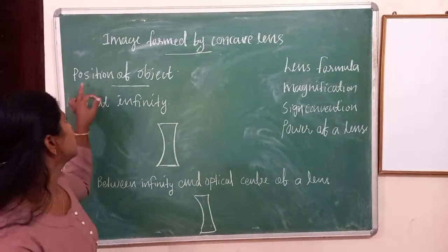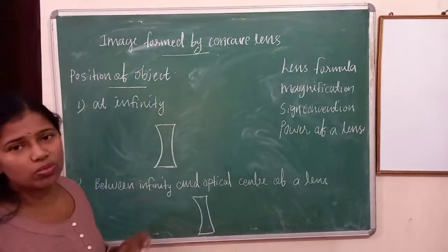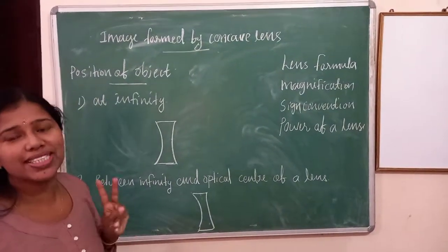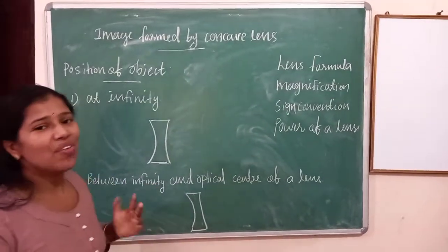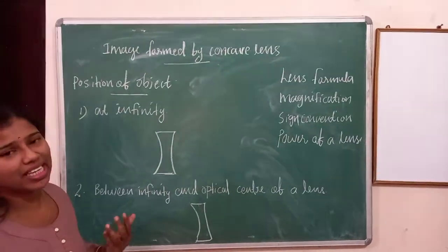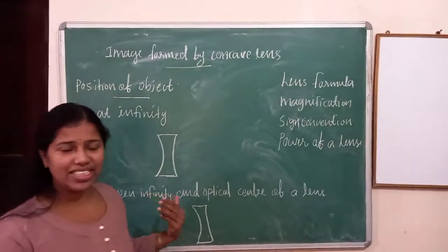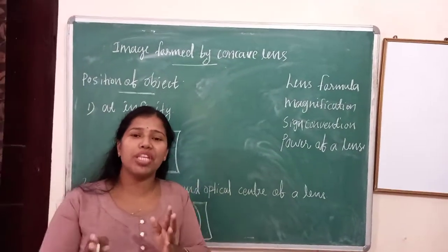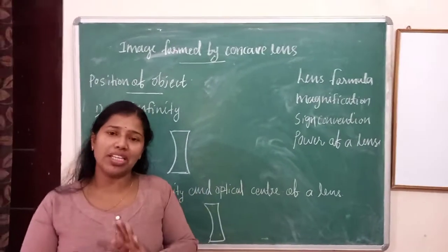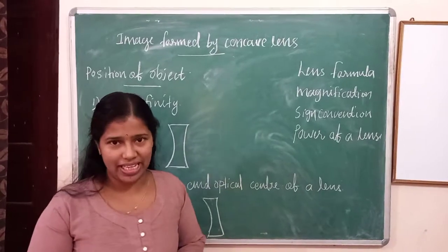We know that there are two cases for the position of the object. First one is at infinity. The second case is that the object is between infinity and the optical center.